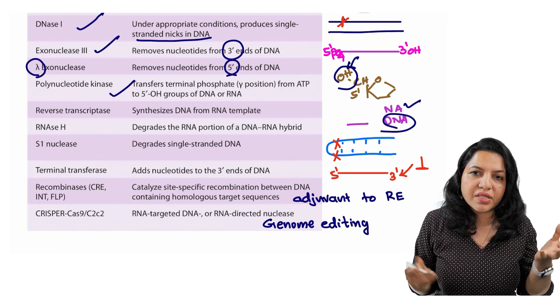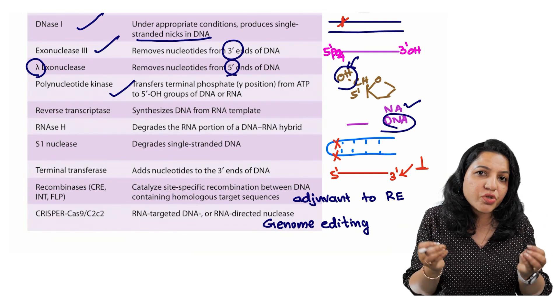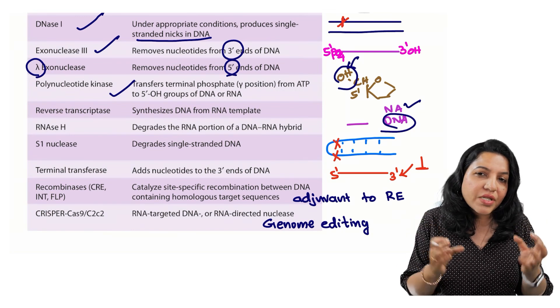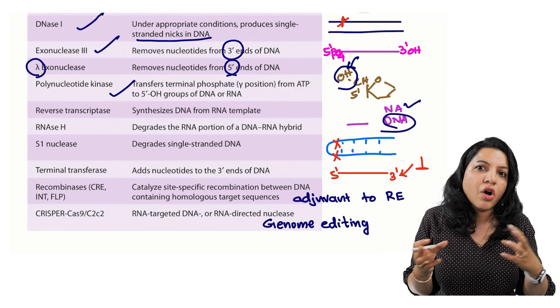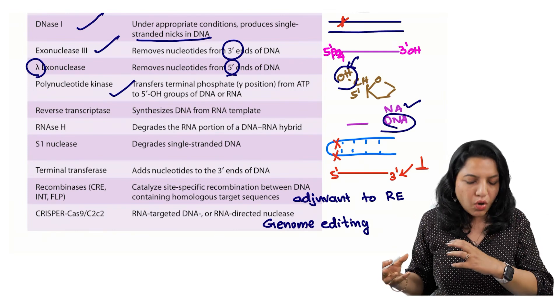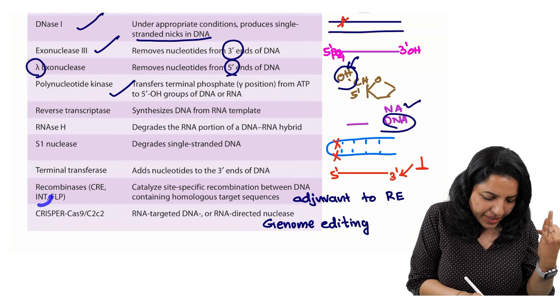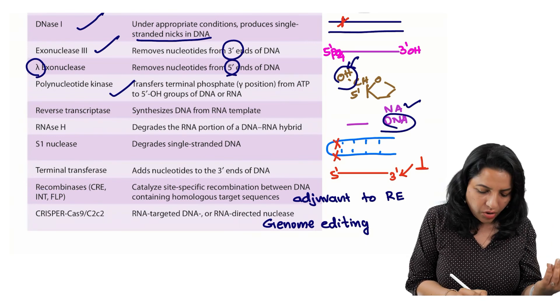Then recombinases. It is the one which is acting as an adjuvant to restriction endonucleases. It helps in the site-specific recombination of the foreign DNA to the host DNA. There are various enzymes. There are CRE recombinases, then INT recombinases and FLP recombinases.